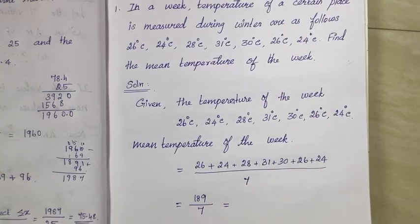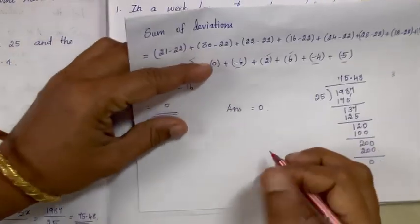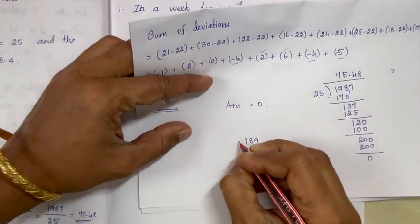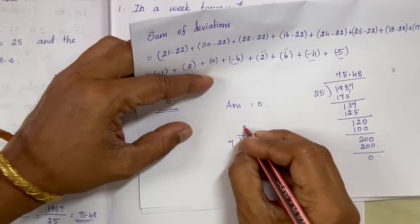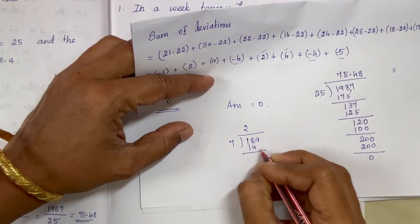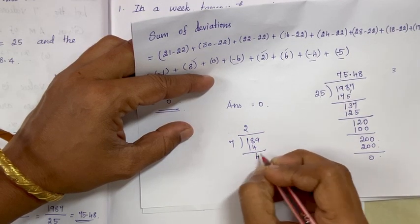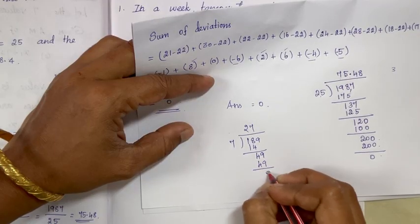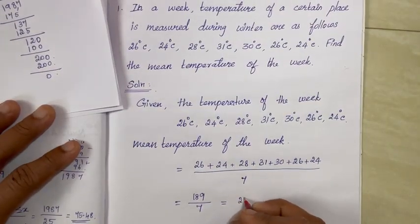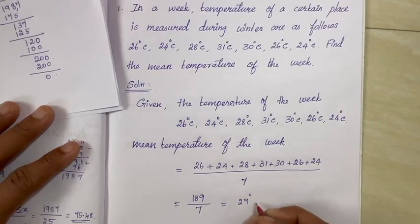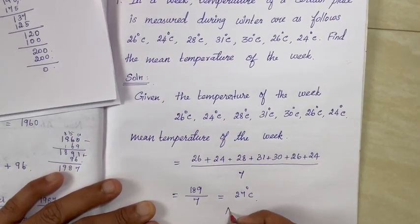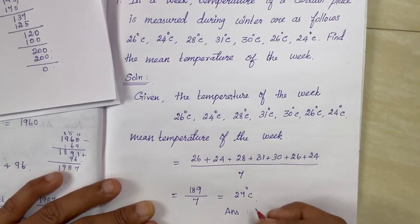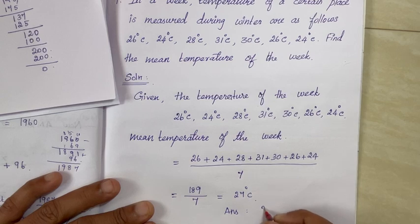That is equal to 189 divided by 7. Two 7s are 14, 7 sevens are 49, remainder 0. So the answer is 27. That is equal to 27 degree Celsius.